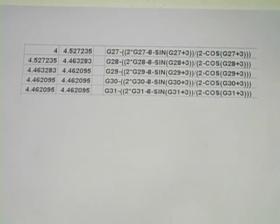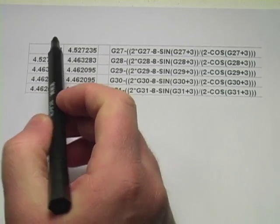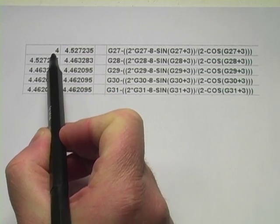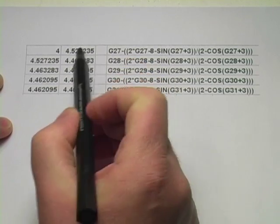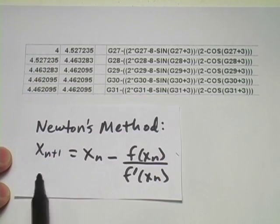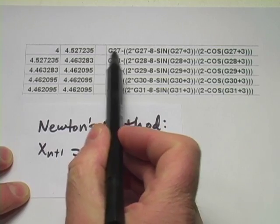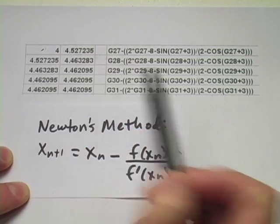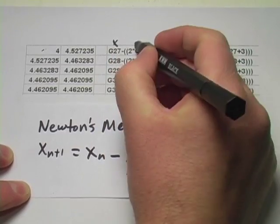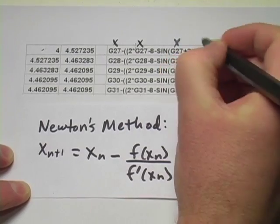So here is just a section of my spreadsheet. In this column, these are the x values. And we start with 4 because that's what they told us to start with. And then here we have this value of x sub n+1. And to do that, I took the x value. And this G27 just refers to the cell in my spreadsheet. So that's x minus 2 times x minus 8 minus the sine of x plus 3.